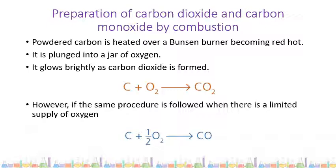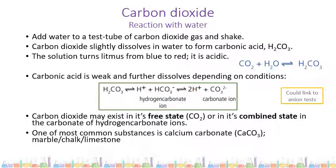Looking more in-depth at carbon dioxide: if you shake a test tube of carbon dioxide with some water, you'll notice that CO2 is slightly soluble in water. Testing that solution with litmus paper or litmus solution, the litmus turns from blue to red, indicating an acidic solution. This is because when carbon dioxide dissolves in water, it forms carbonic acid, H₂CO₃, which is a weak acid.